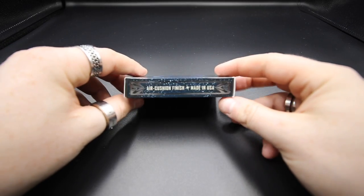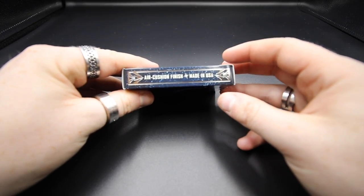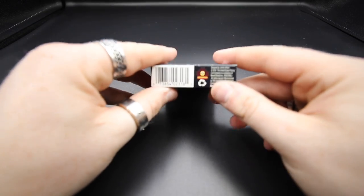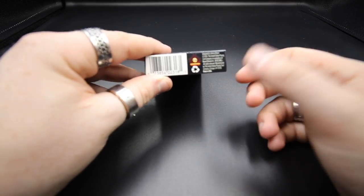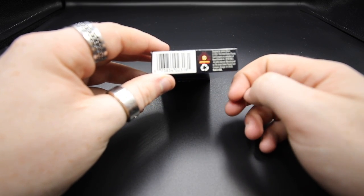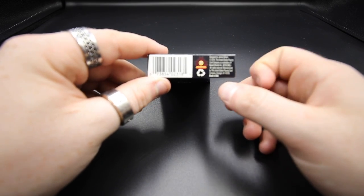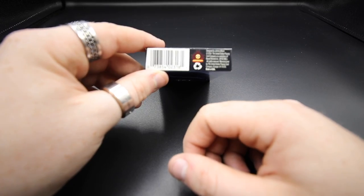It goes air cushion finish made in the USA. And then it also has on the other side air cushion finish made in the USA. On the bottom it has the collectible playing cards logo and then the Recycle logo. And then just letting you know this was produced in 2016 by the United States Playing Card Company. And then it has a white barcode.